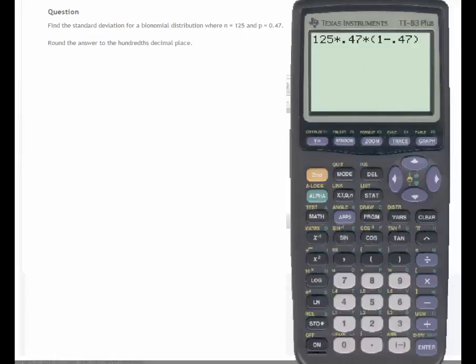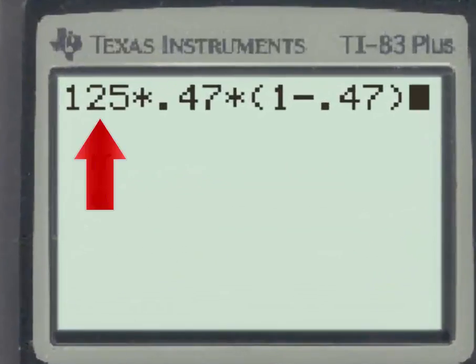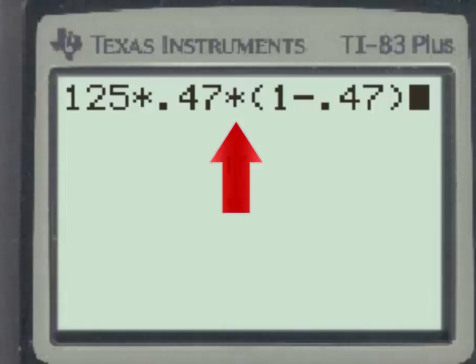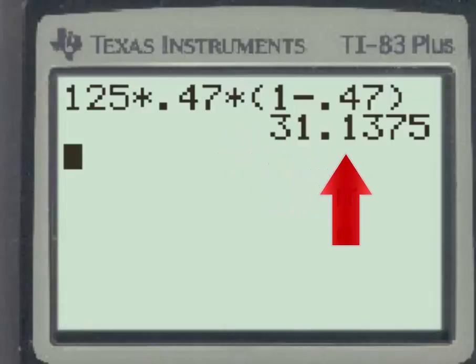Again, turning to the TI-83 to find the variance, we have n times p times q, which is 1 minus p, and our variance equals 31.1375.